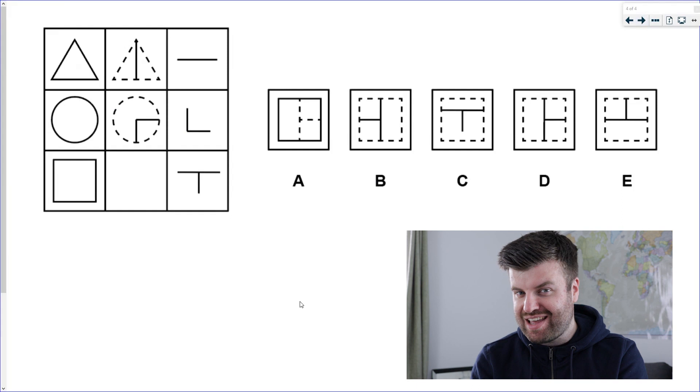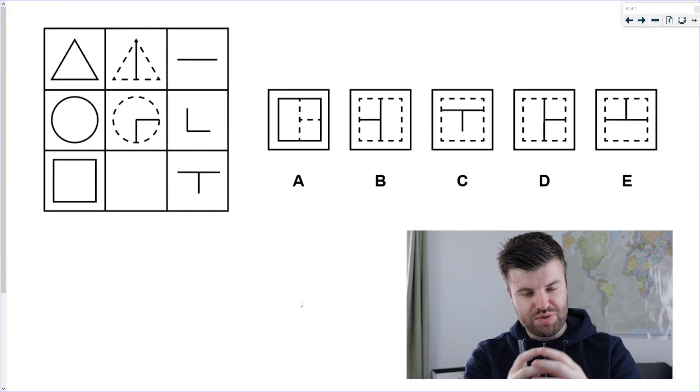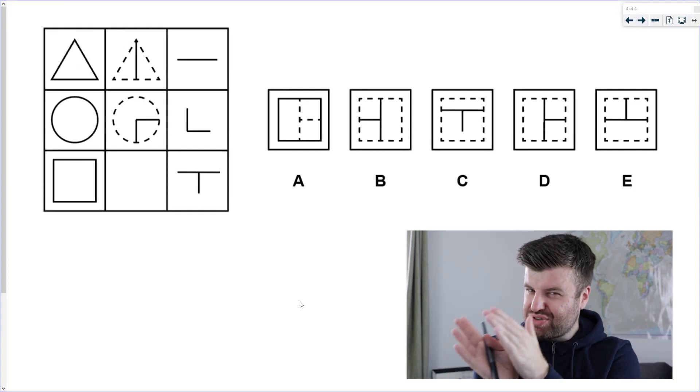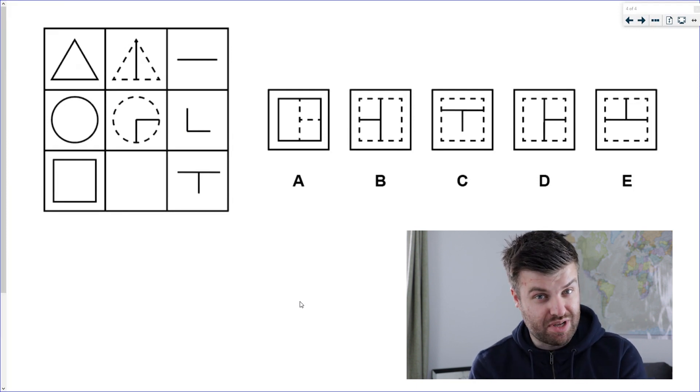The thing that makes grid questions so tricky is there are a lot of different ways to approach it, and what one person does for a question might be different to what another person does for the exact same question, and they might come to the same correct answer. So for this question here, it's something different again. It's not a group like in the rows we just did together, it's not really a transformation either. We might call what happens in this one a combination puzzle.